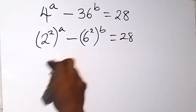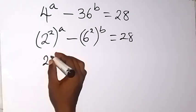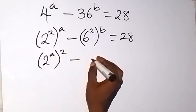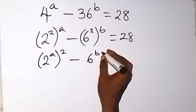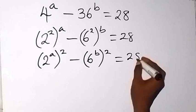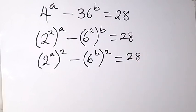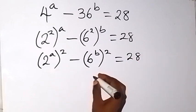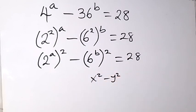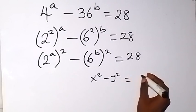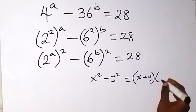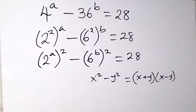From here, we now say we have 2 raised to power a, then raised to power 2, then minus 6 raised to power b, then raised to power 2, equals to 28. And again, what we have here is in the form of x squared minus y squared, which is the difference of two squares, which can be written as x plus y, multiplied by x minus y.